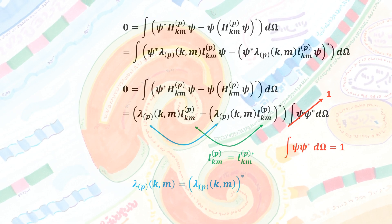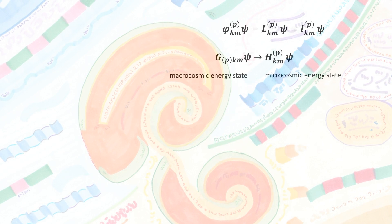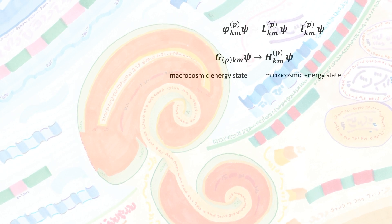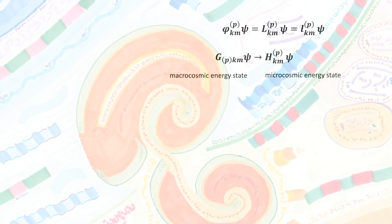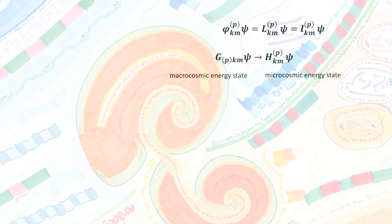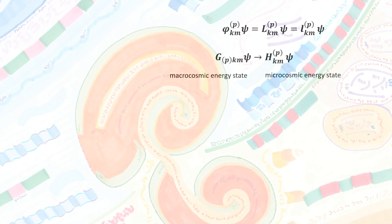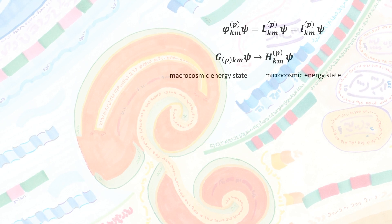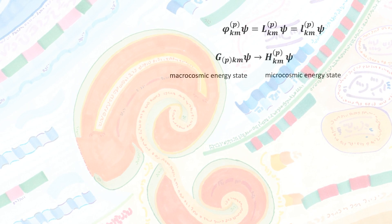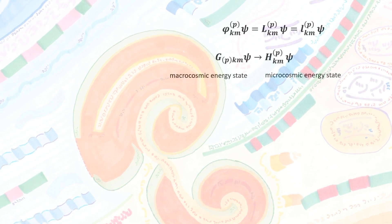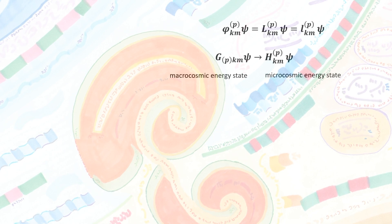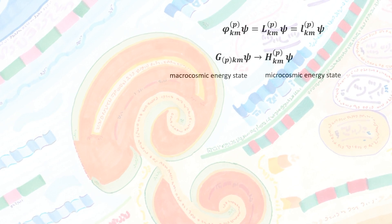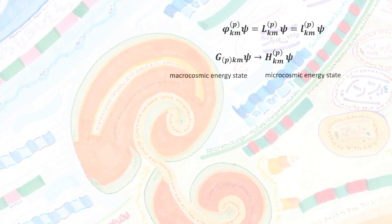Now let us look again at our state function psi and its relation to the microscopic three-pointer symbol phi with three indexes. We found this relation: phi acting on psi equals L acting on psi, and that equals eigenvalues of L multiplied by psi. That's the first relation. And on the other hand, for the macroscopic energy state which we had represented by g, we found that they correspond to the microcosmos as g acting on psi corresponds to the microscopic energy state represented by H acting on psi.